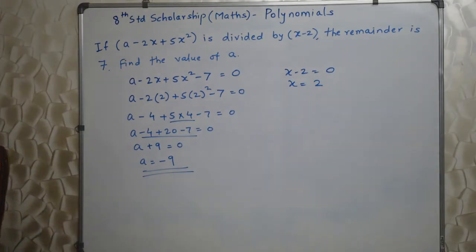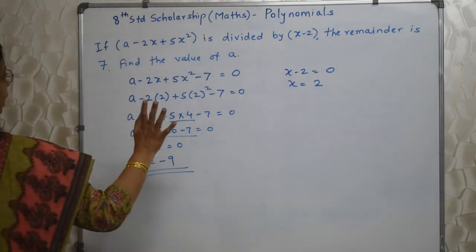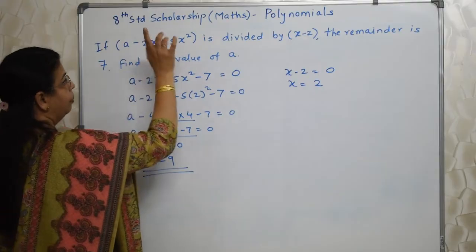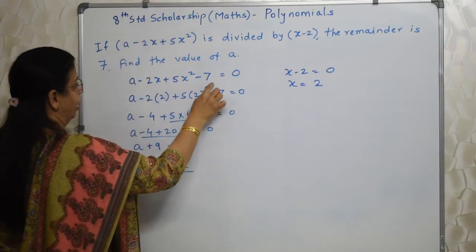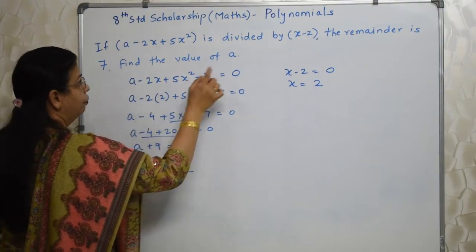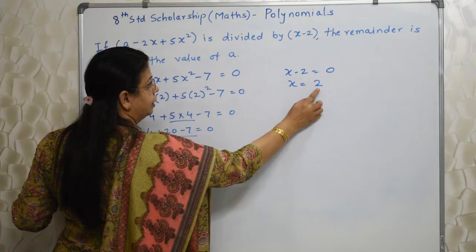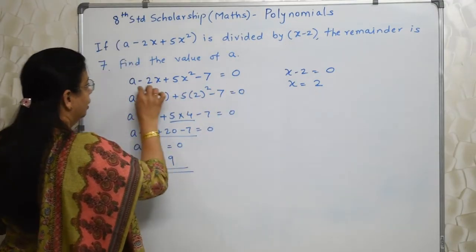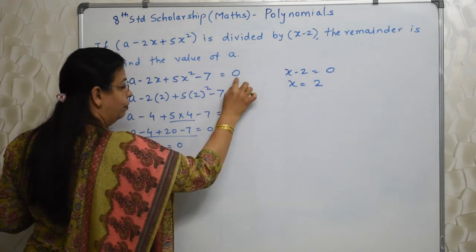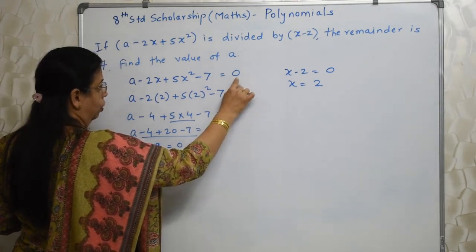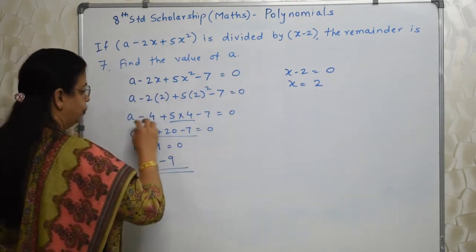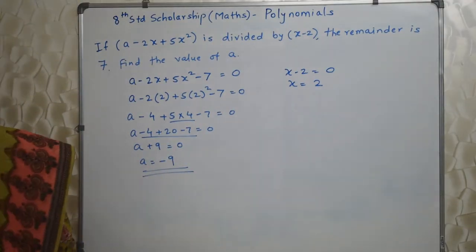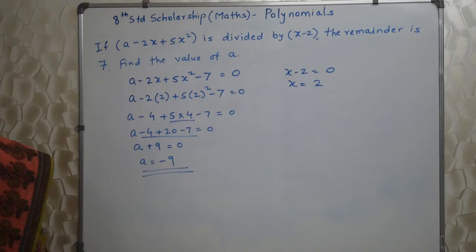Isn't it interesting? You have to understand: this is the factor of this polynomial when we subtract 7. When we substitute x equals 2, derived from x minus 2, the value of the entire polynomial becomes 0. Substitute that 2 and find out the value of a. Very, very interesting.